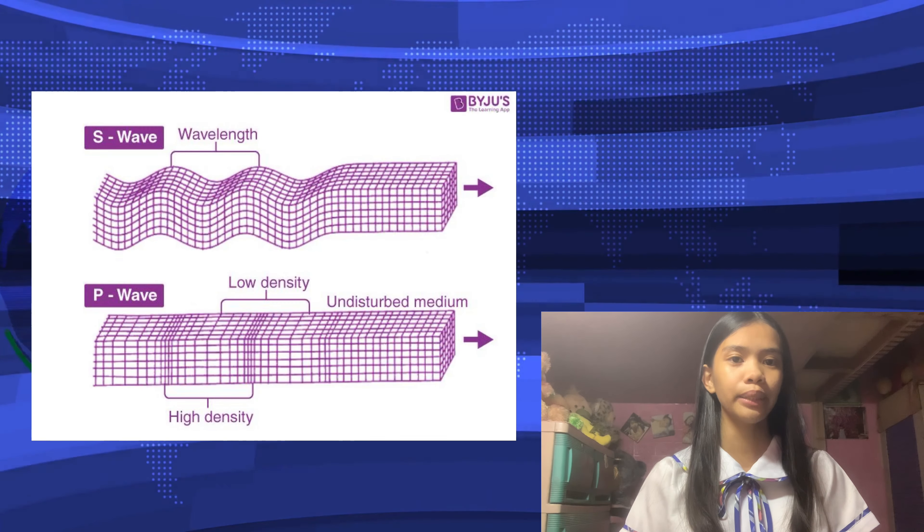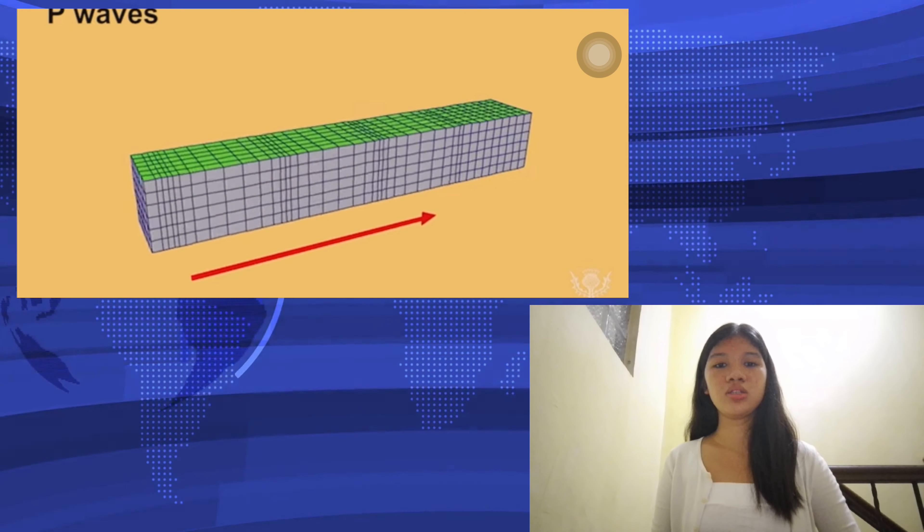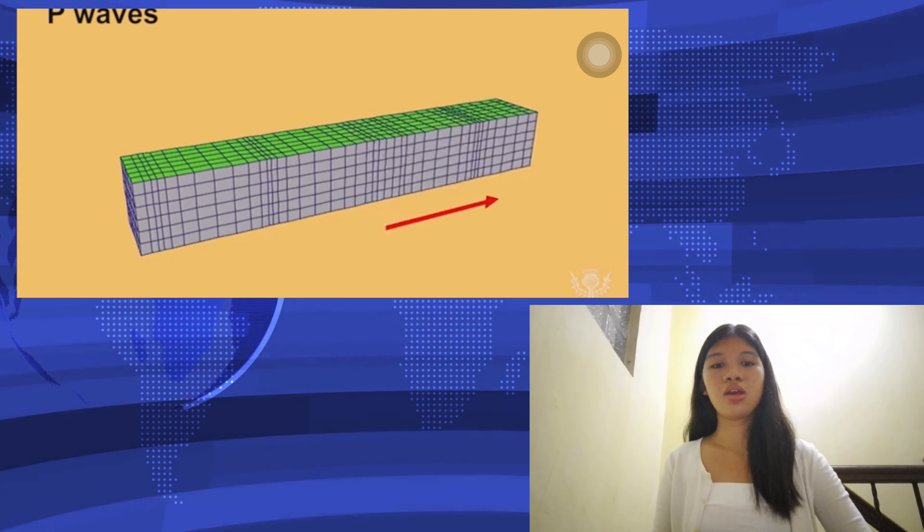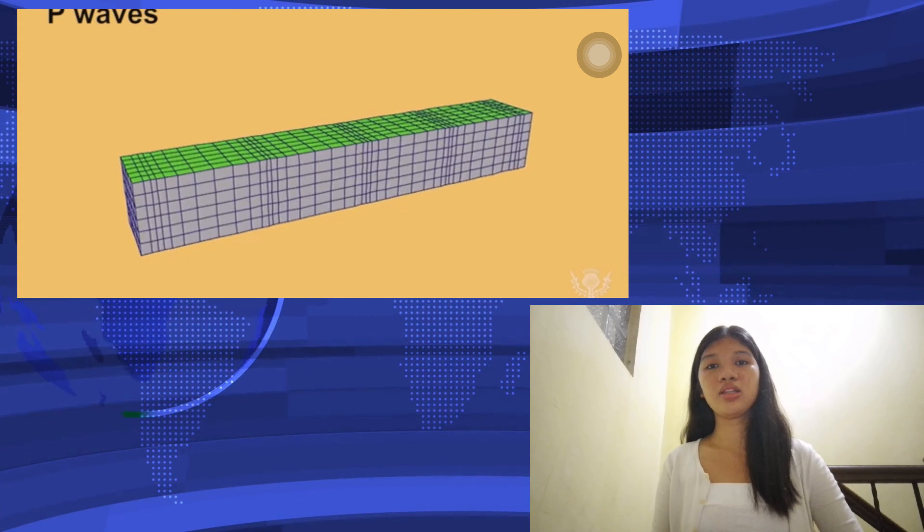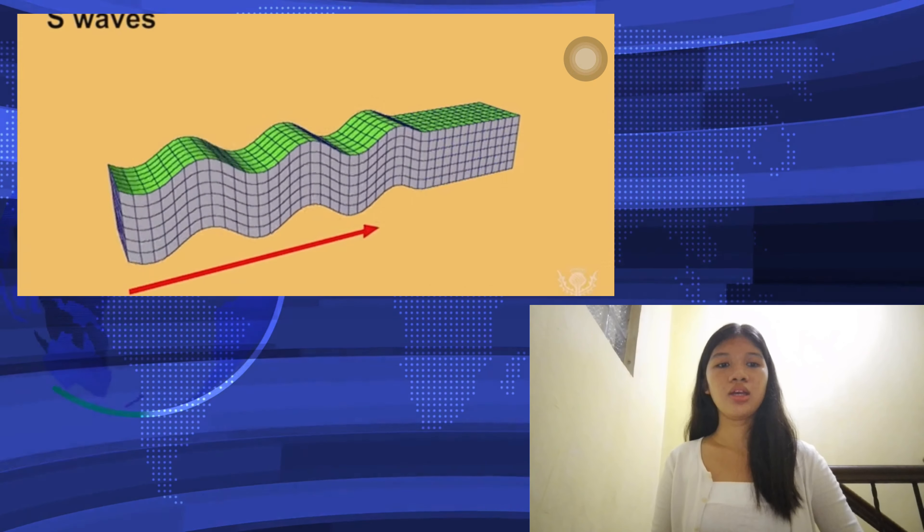P-waves are the fastest type that can travel through both solid and liquid layers of the earth. They compress and expand the material they move through, which is why they are the first to be detected by seismographs.